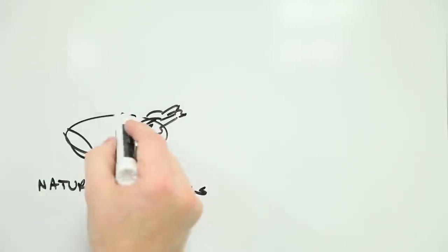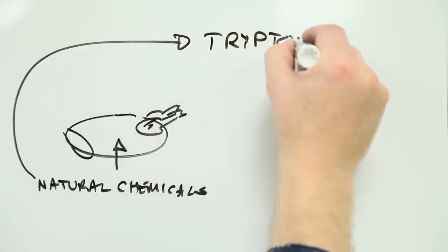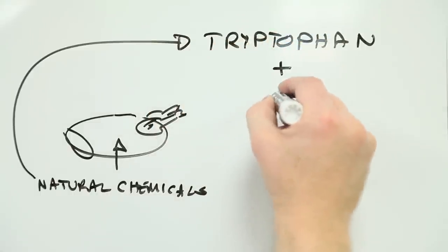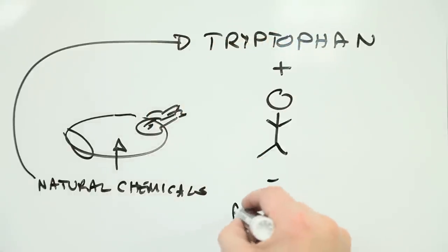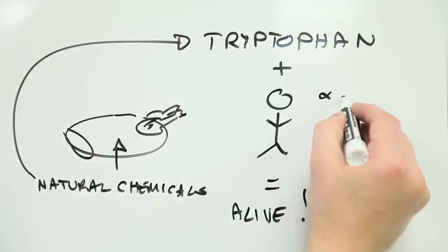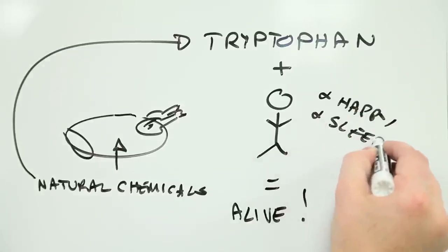That something in turkey meat is tryptophan, one of the essential amino acids we all need to remain alive. Tryptophan is an essential building block of proteins in our bodies, but it's also used in the production of serotonin, a neurotransmitter that helps regulate sleep patterns, amongst other things.